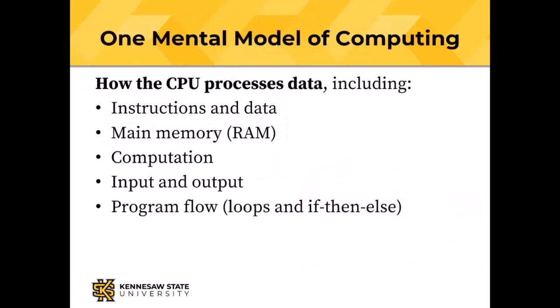We had talked about mental models. The mental model we are going to concentrate on for the next several classes is how the CPU processes data — instructions which are binary numbers, data also binary numbers, main memory, computation, input and output, and a way of controlling program flow: doing things like looping or making decisions with if-then-else.